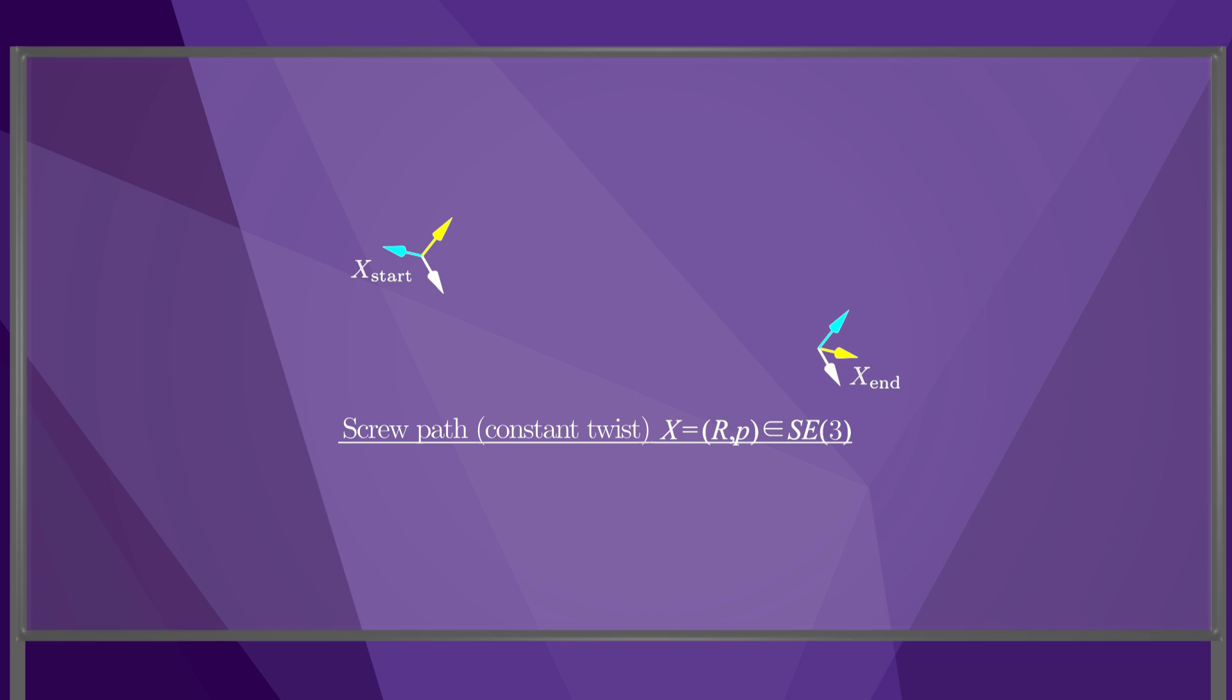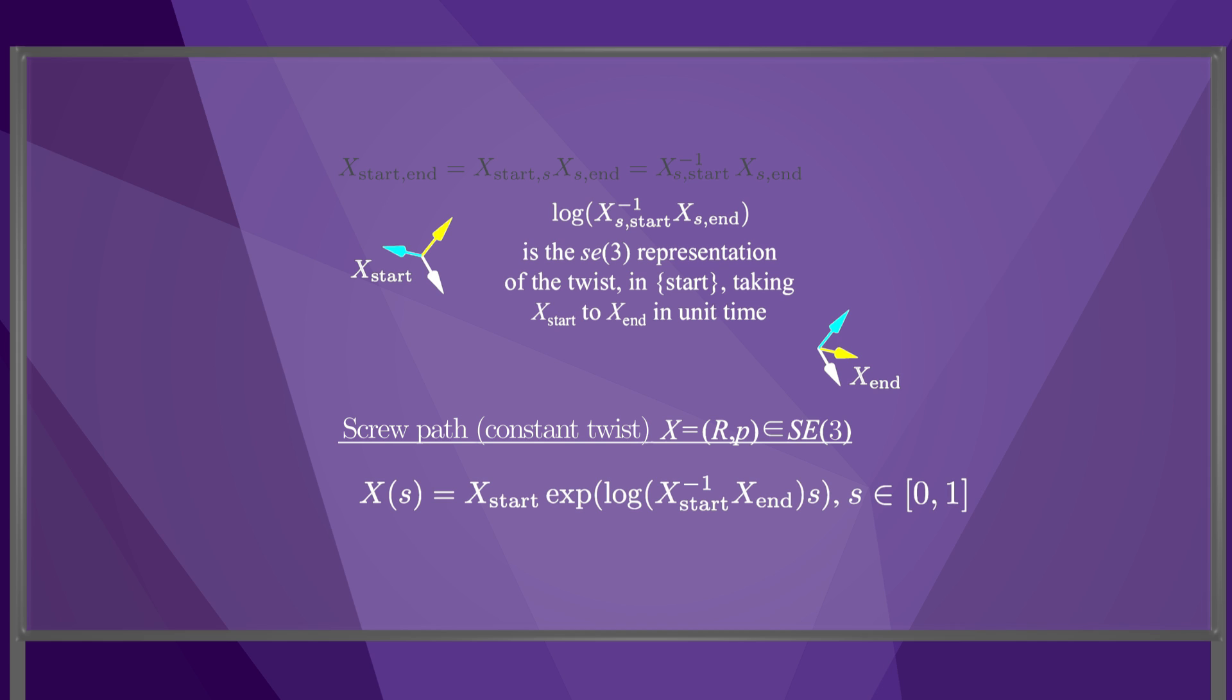First, let's express the frame x_end relative to x_start. Each of x_start and x_end is implicitly defined in a space frame S, so by our subscript cancellation rule we find that x_start⁻¹ × x_end is the configuration of the end frame and the start frame. The log of this is the little se(3) representation of the twist expressed in the start frame that takes the start frame to the end frame in unit time. So our formula for the path is x(s) = x_start × exp(s × log(x_start⁻¹ × x_end)) as s goes from 0 to 1.